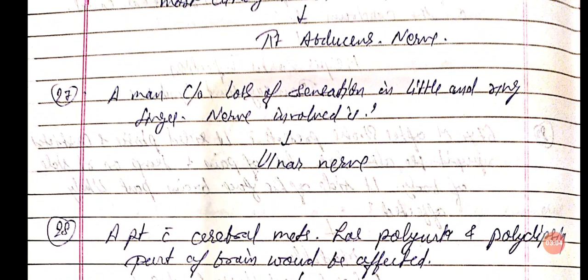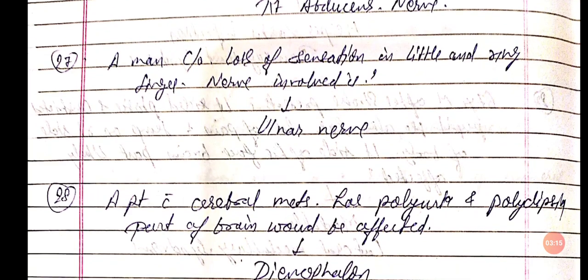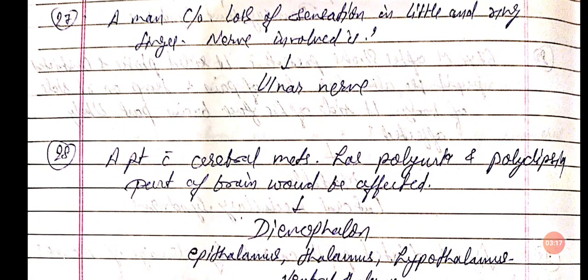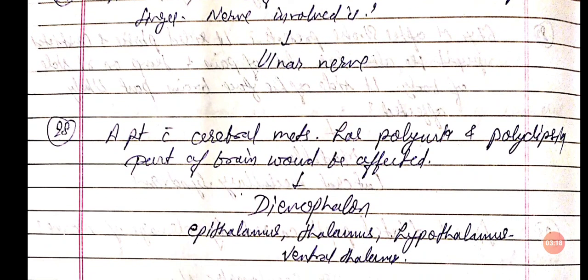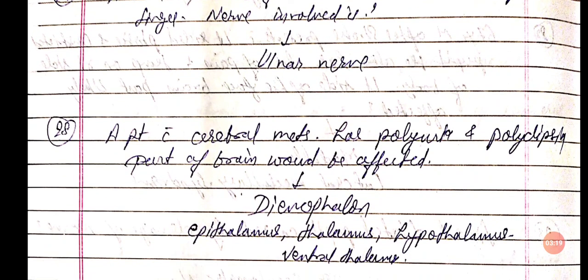A patient with cerebral metastases has polyuria and polydipsia. The part of the brain likely affected is the diencephalon. The diencephalon includes the epithalamus, thalamus, hypothalamus, and ventral thalamus.